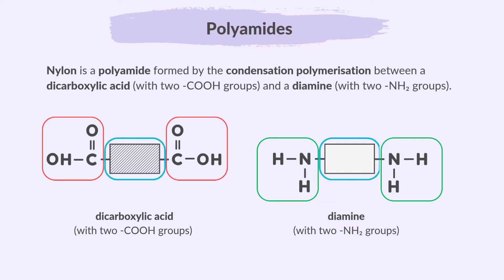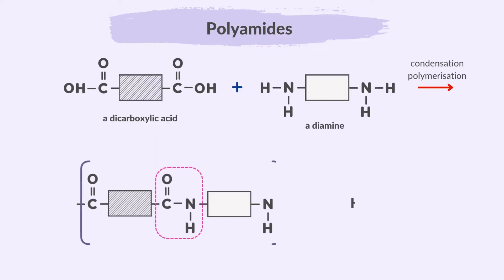These boxes represent everything between the functional groups, like the carbon chains. During this process, amide linkages are created, releasing water. In condensation polymers like nylon, small molecules — for example, water — are produced during polymerization, unlike addition polymers where no byproducts are formed.